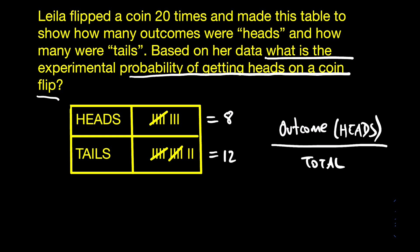The number of heads from the table is 8, and you would divide that by 20, which is the total number of coin flips. Remember that whenever you have a fraction, you always have to reduce it to its lowest expression. So if you divide both numbers by 4, which is the common factor, you end up with 2 over 5.